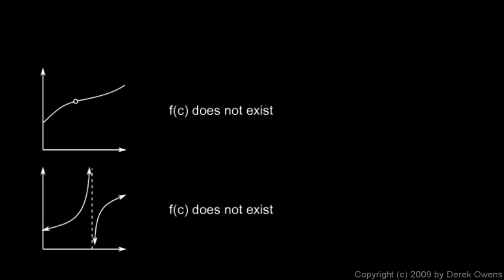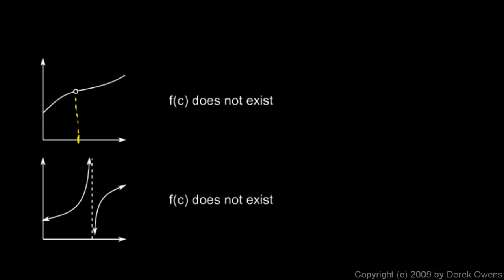In this first picture, we're looking at a particular x value which we'll call c, and f(c) does not exist. So the function is not continuous at this point because the function does not exist there. In the next picture, again at x equals c, the value of the function does not exist — there's a vertical asymptote right there. The function itself is not defined; there's an infinite discontinuity. The function is not continuous at that point because it doesn't exist there.